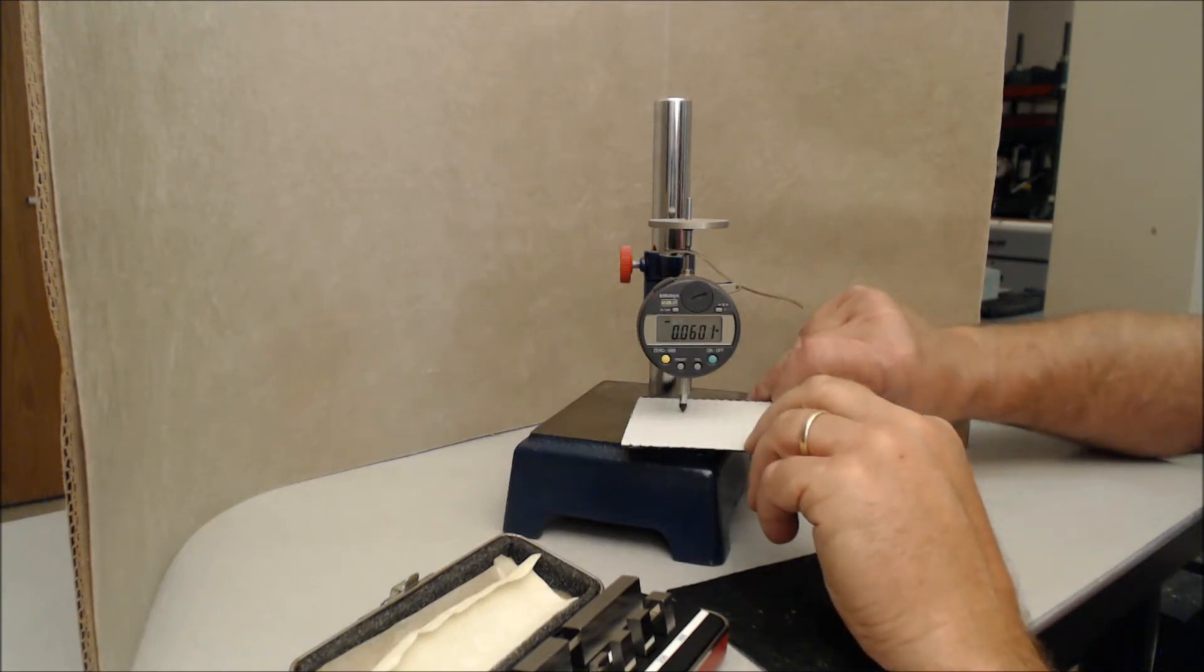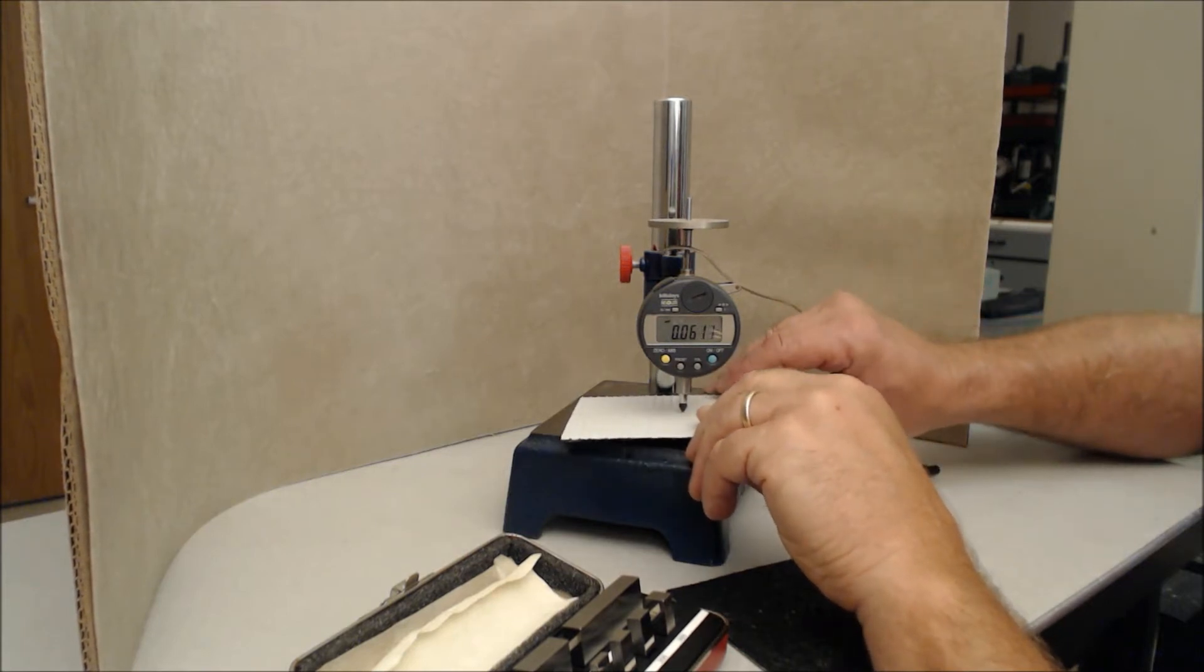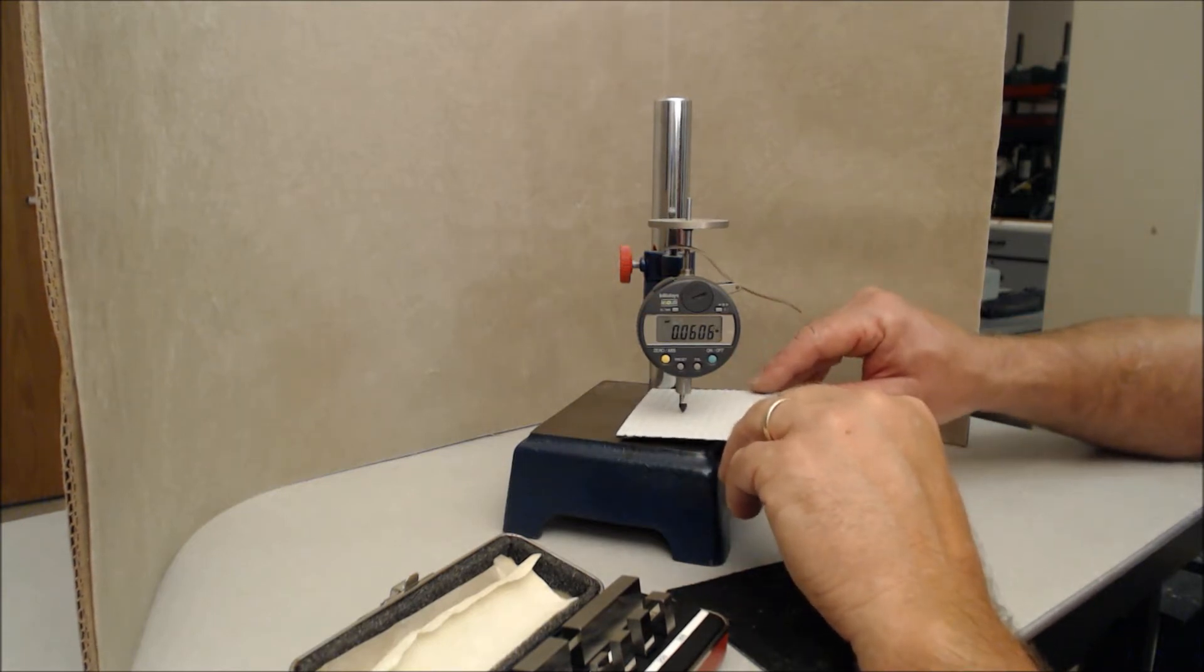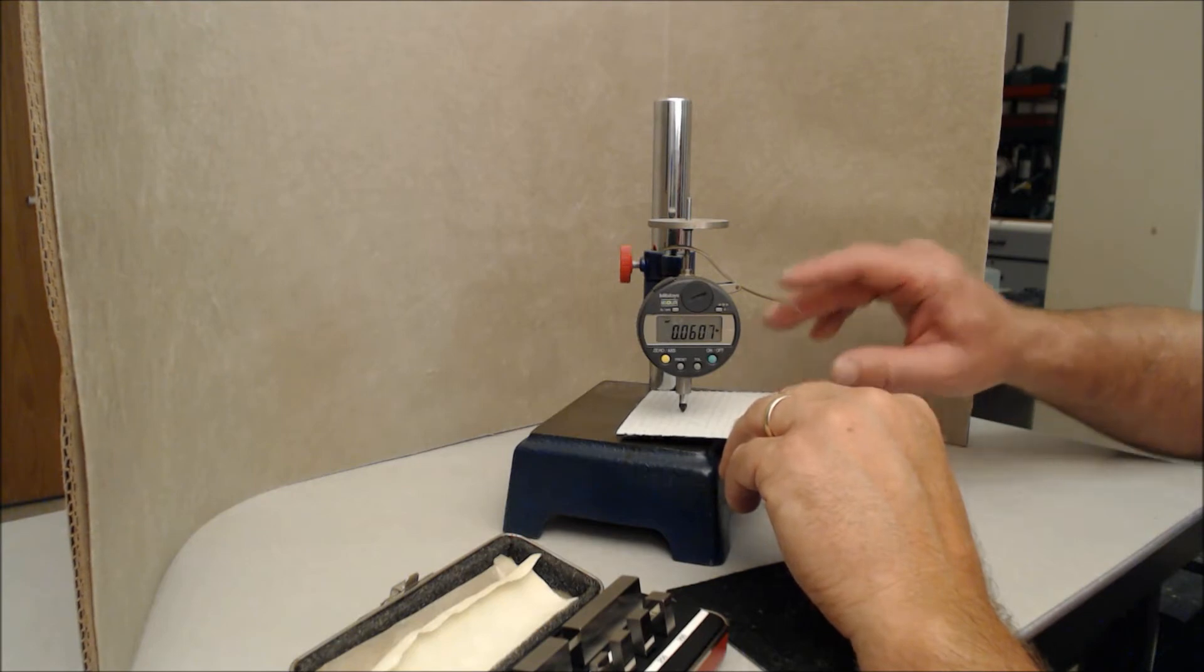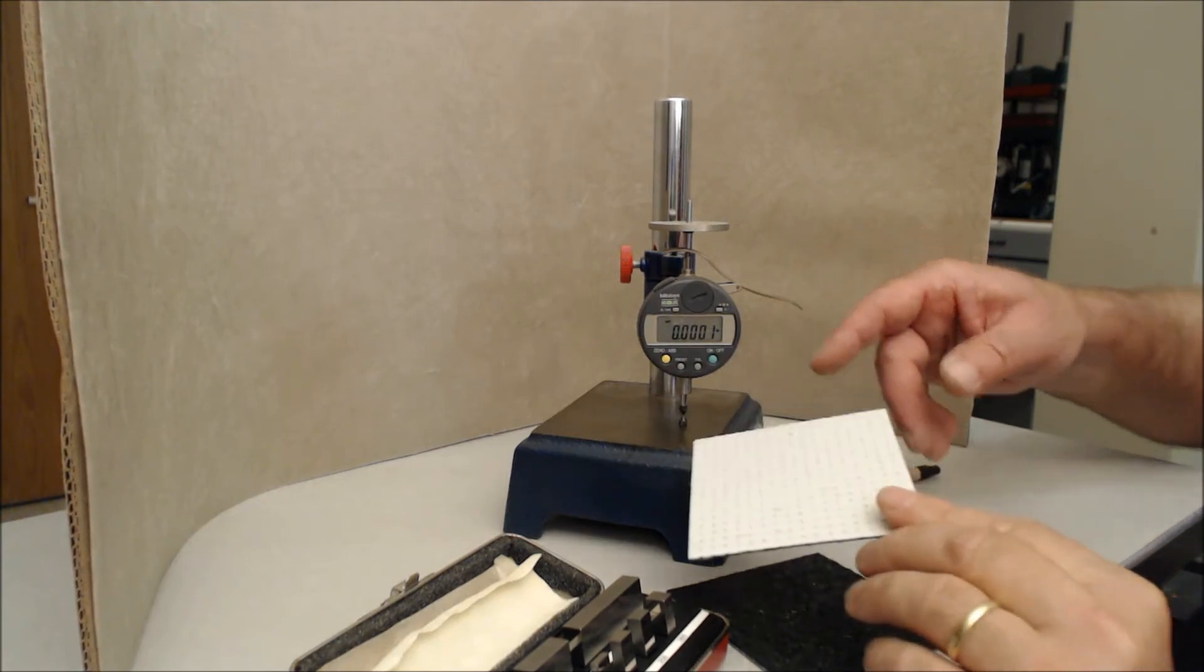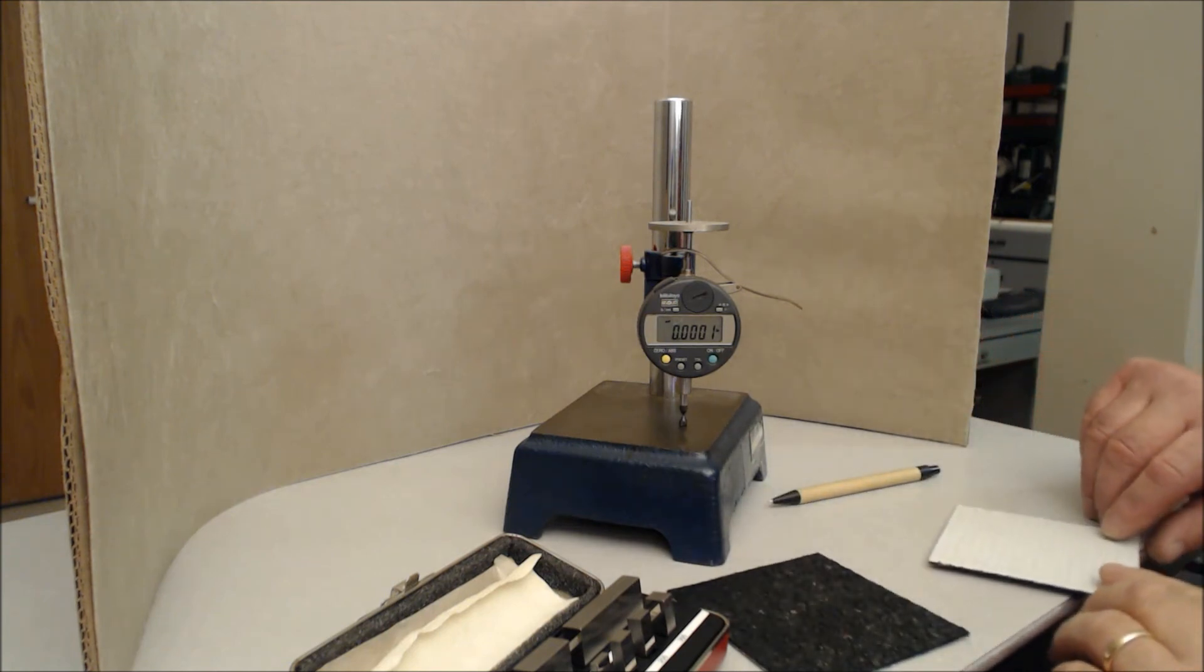Here we have the first reading, 59.8. The second reading, 61.1. And the third reading, 60.4. So 59.8 would be this value, and the gauge came back to zero, or very close to it.